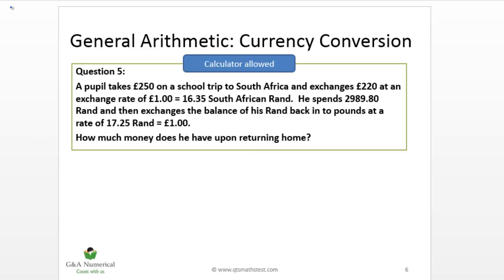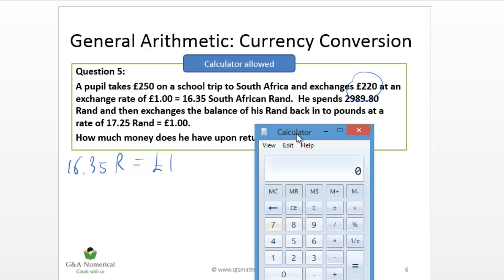So as always with these questions, it's going to be key to identify the exchange rate. So the question says 16.35 rand is equivalent to a pound, and he exchanges 220 pounds. So we have to multiply 16.35 times by 220. So let's do that on the calculator, seeing as we're allowed to use it. So if I type 16.35 multiplied by 220, press return, that's 3,597 rand, OK?